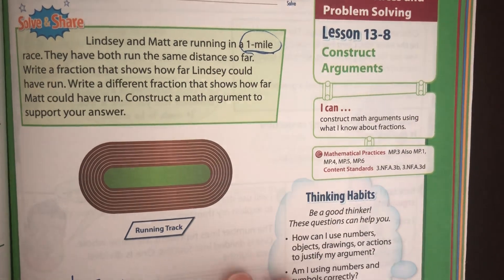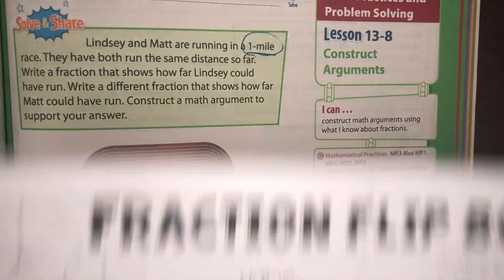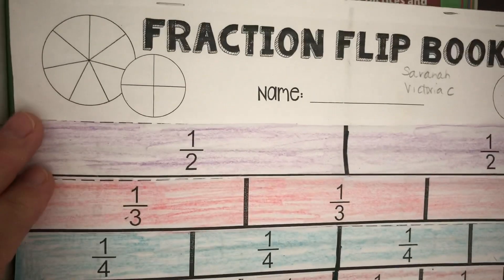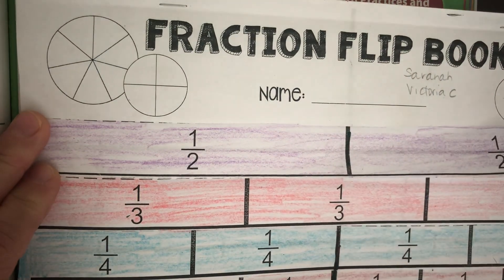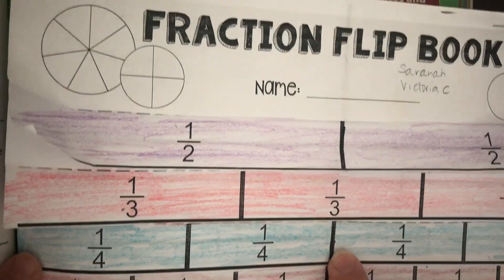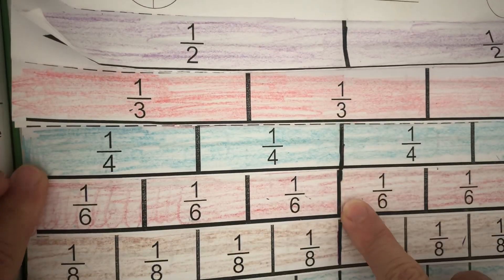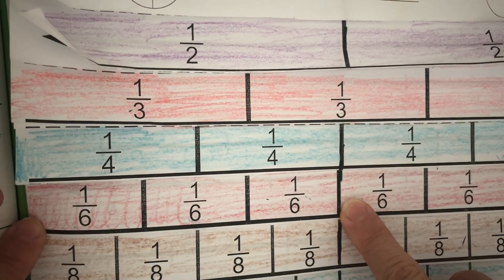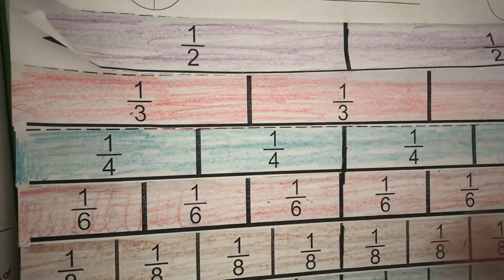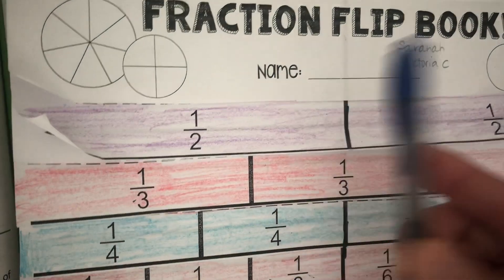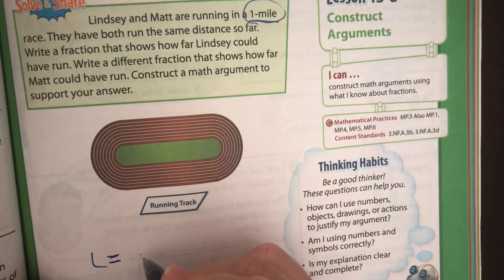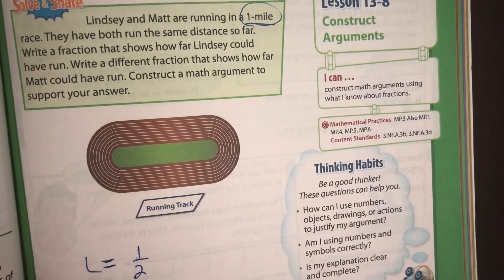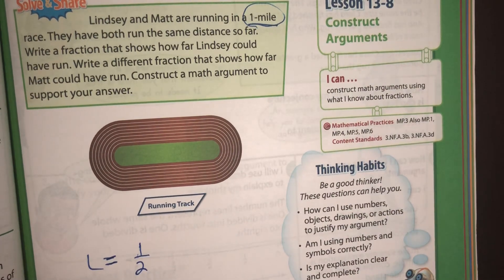Let's try to use one-half. So Lindsay's run one-half. What other fraction could we use? Could we say Matt has run two-fourths? Could we say three-sixths? Sure — how about four-eighths or six-twelfths? Anything that's still equivalent to one-half works here.